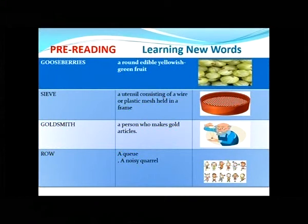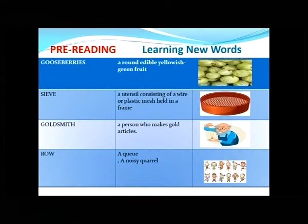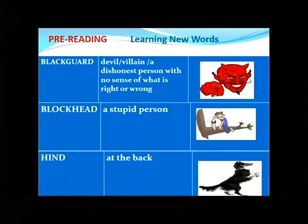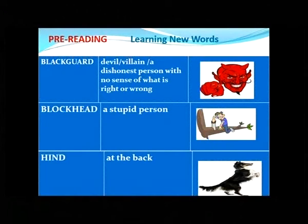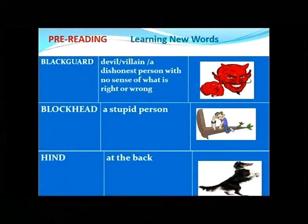'Goldsmith': a person who makes gold articles. 'Row': again it has two meanings — a queue and a noisy quarrel, as you can see in the picture. 'Scoundrel': a black-guard; it has many meanings — a devil, a villain, or as in this story, a dishonest person with no sense of what is right or wrong. 'Blockhead': a stupid person. 'Hind': at the back — as you can see in the picture, the dog is standing on its hind legs, meaning back legs.